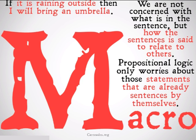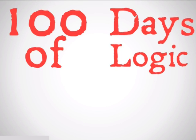If I take the statement 'If it is raining outside, then I will bring an umbrella,' we can see that 'it is raining outside' and 'I will bring an umbrella' are sentences on their own. So we are concerned with them in terms of propositional logic. We can replace them with letters: 'If p, then q' is what that statement looks like turned into propositional logic that we can work with.